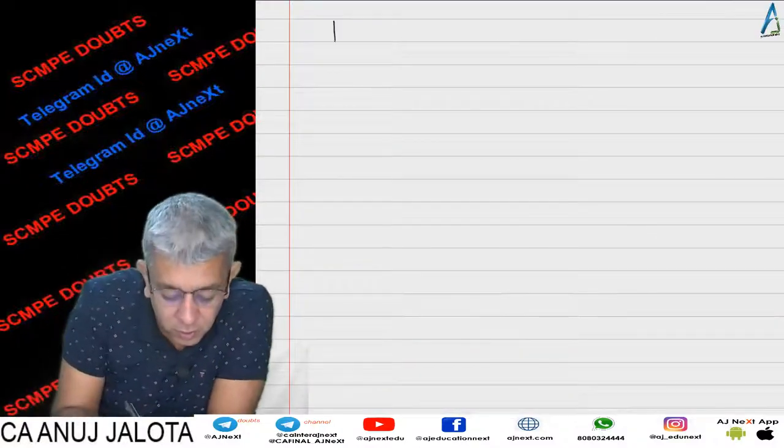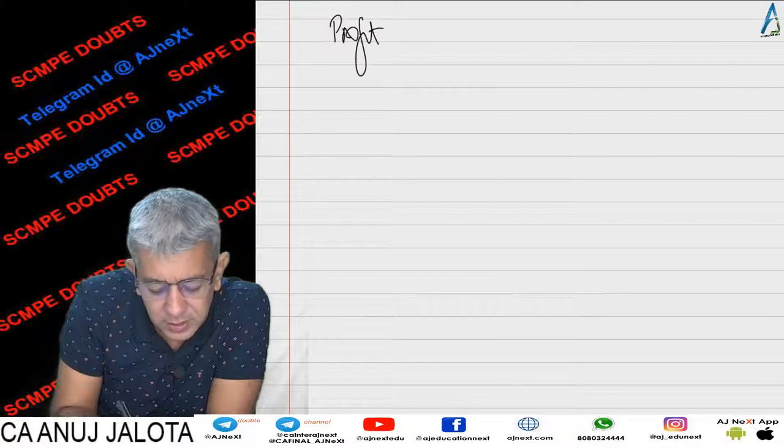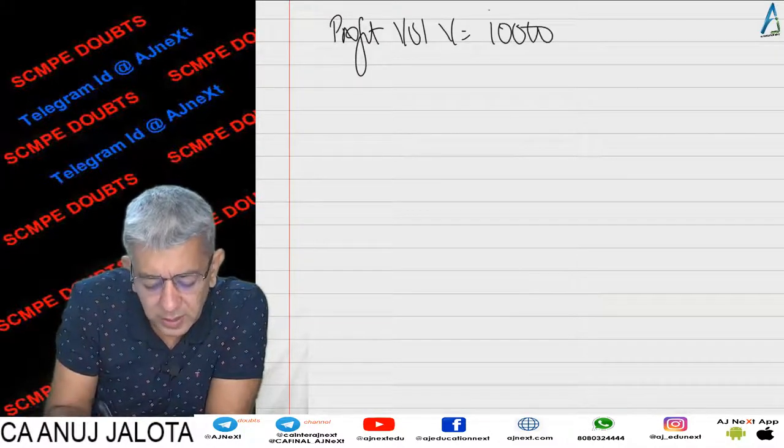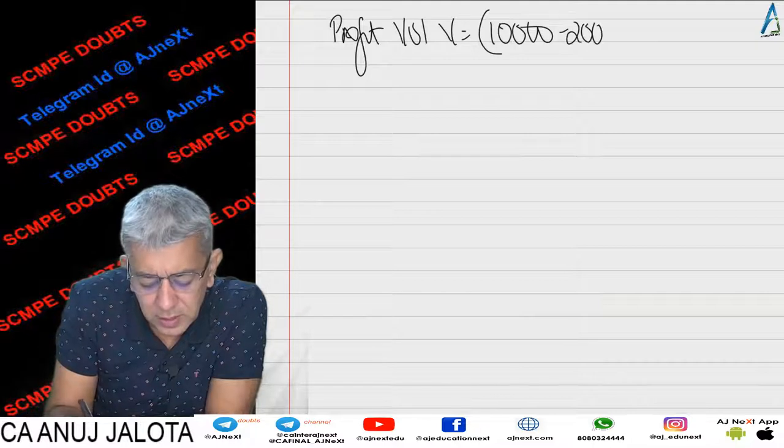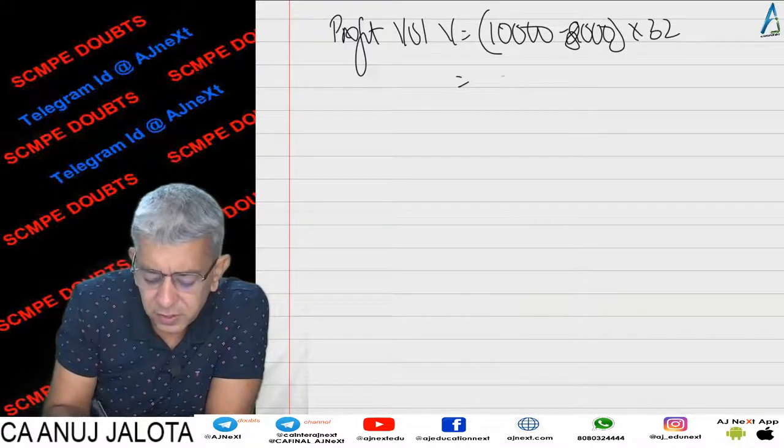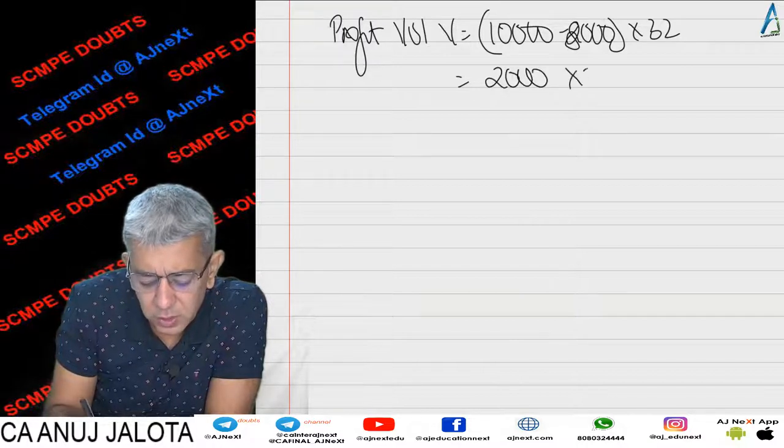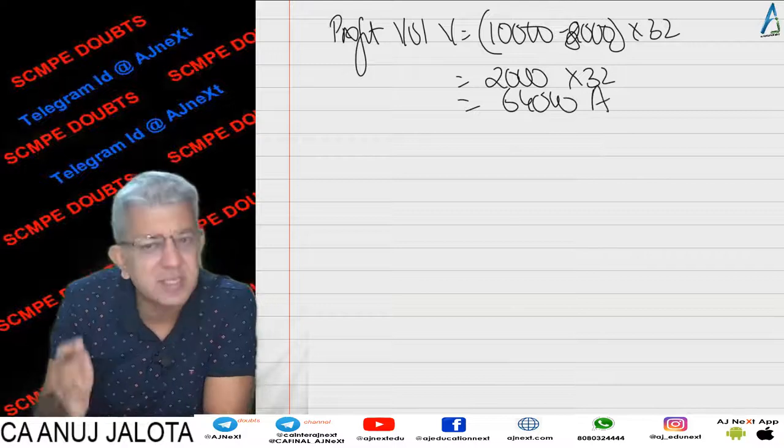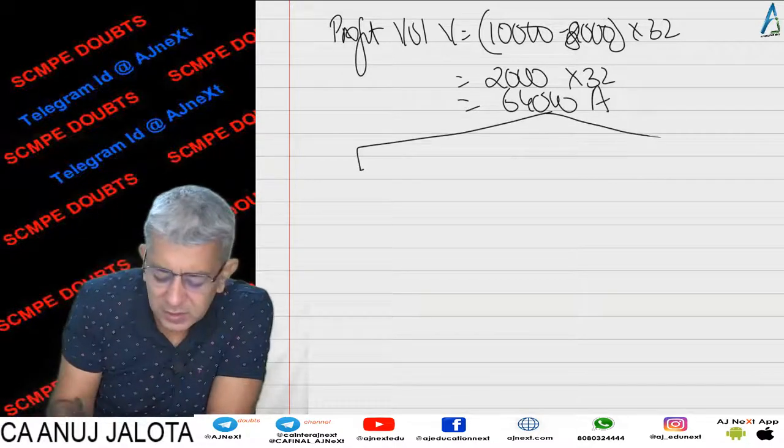In this case, 10,000 units we had to be selling, but 8,000 units we are selling, times standard profit of 32. Therefore, 2,000 into 32 makes it 64,000. Now when we did the analysis, we are selling less. When we did the analysis, we started to find out that